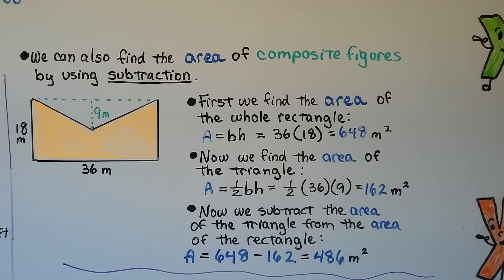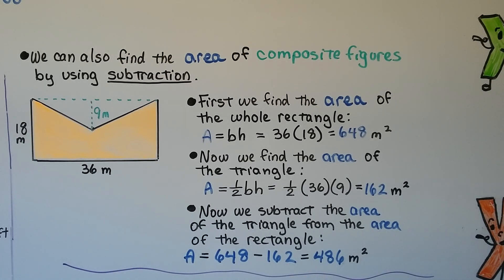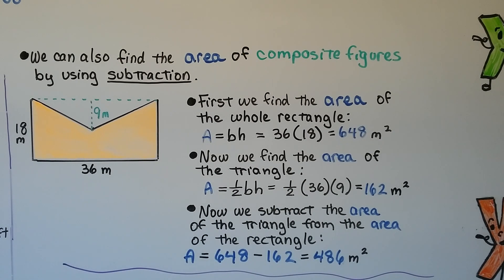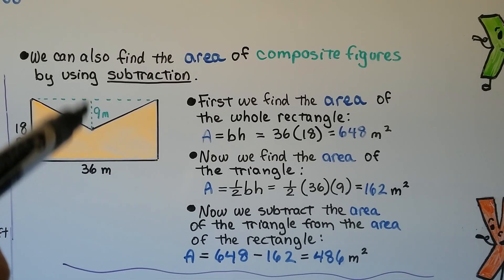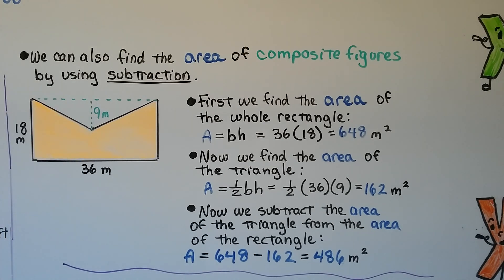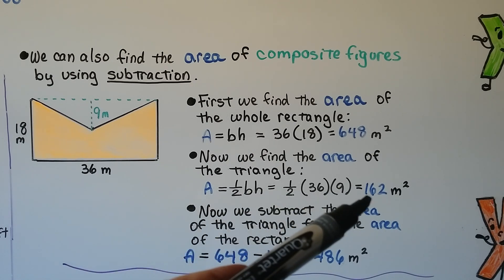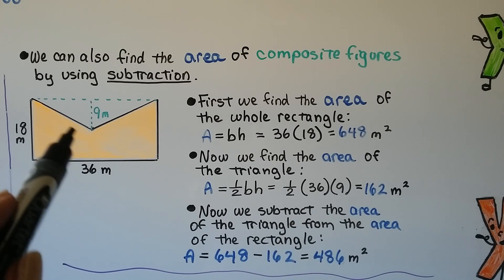We can also find the area of composite figures by using subtraction. We look at this figure as just a big rectangle and find its area: 36 times 18 gives us 648 m². Now we find the area of the triangle that's missing. The top is 36 meters, and this segment is 9 meters, so the triangle area is ½ × 36 × 9 = 162 m². We subtract 162 from 648 and get 486 m² for the orange area.